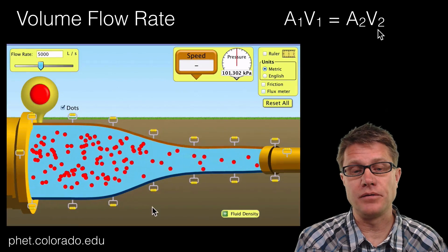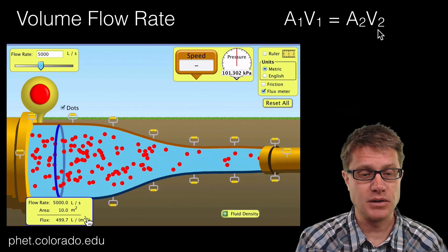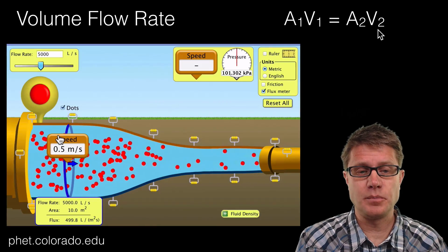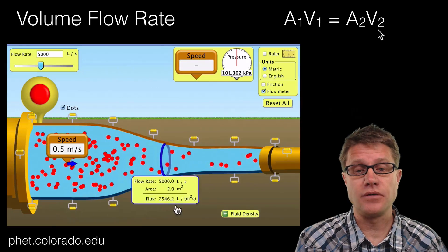And so if we grab a flux meter and just measure what the cross-sectional area is in this pipe, you will see that the area is going to be 10 meters squared. If I measure the speed, it is going to be 0.5 meters per second. And so A times V equals 5.